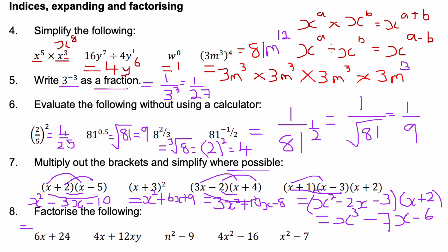Question eight: factorise the following. Factorising means put into brackets. The first two use a single bracket. The highest common factor of 6x and 24 is six, so it's six lots of (x + 4). You can check by expanding the single bracket. For 4x and 12xy, the highest common factor is 4x, giving 4x(1 + 3y). Four is the HCF of 4 and 12; x is the HCF of x and xy because xy means x times y.